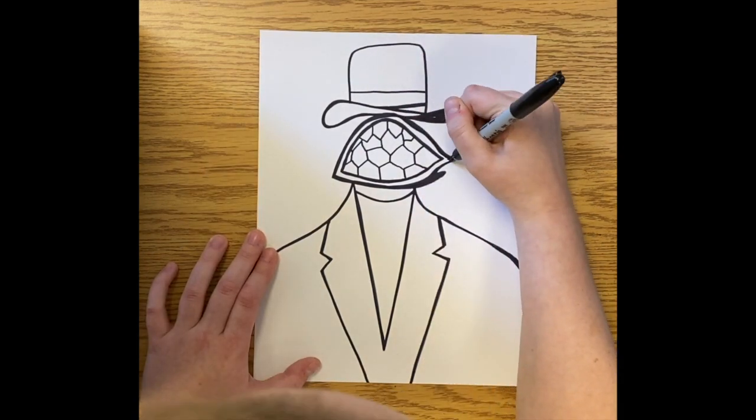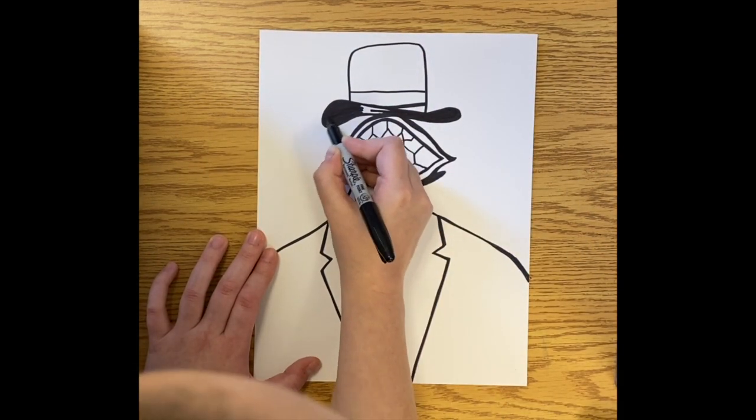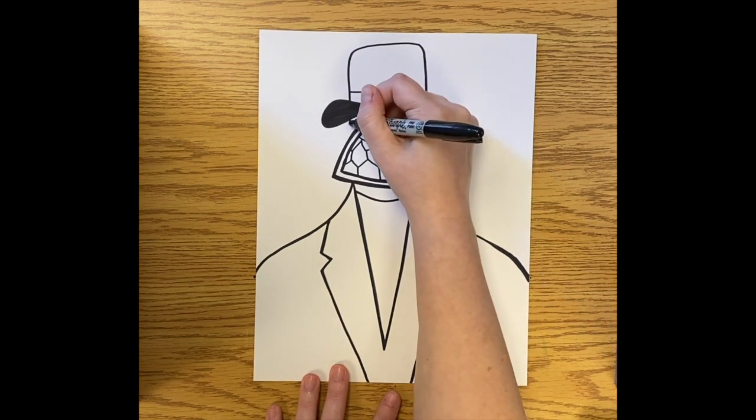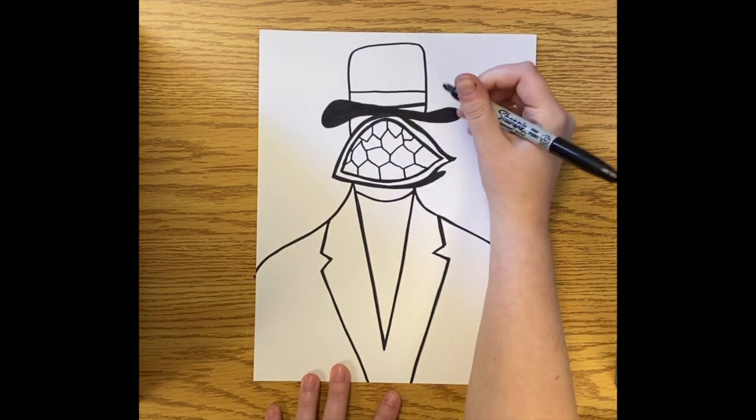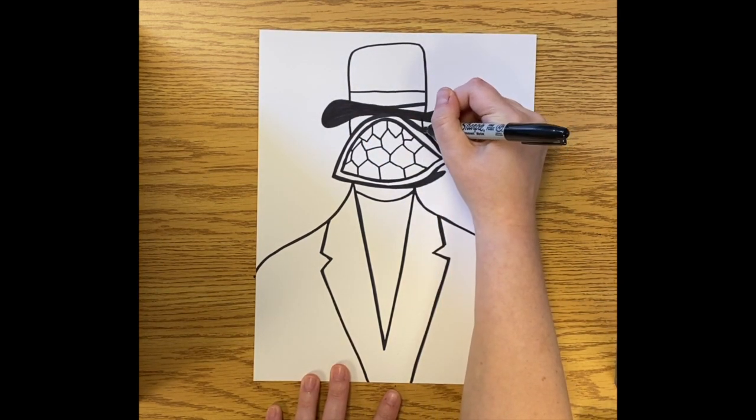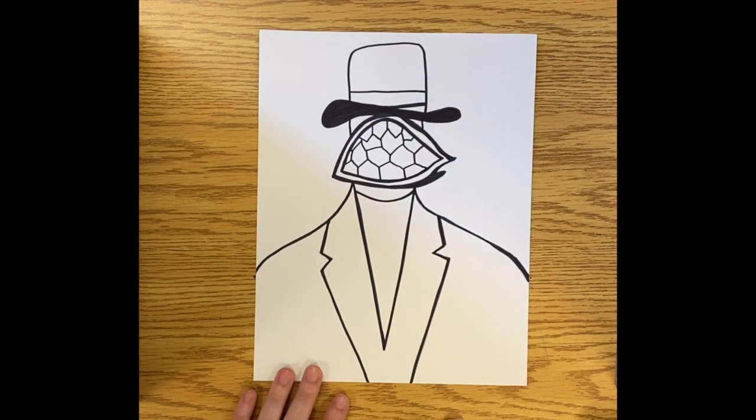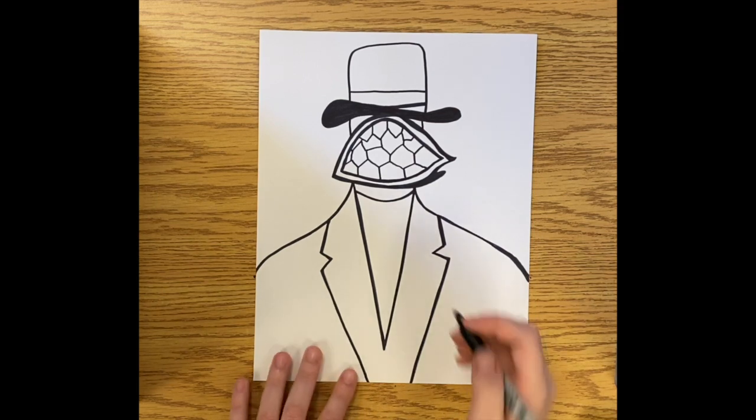Once I have those shapes in, I ended up coloring the bottom of my hat all the way in black. And now I'm just drawing lines that would be my face behind the turtle shell. So just two kind of straight lines down.